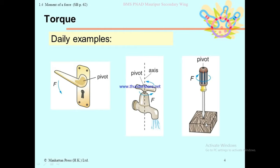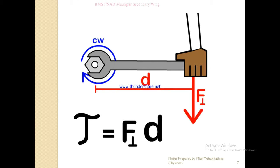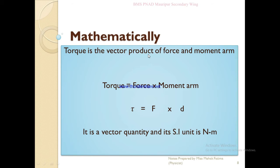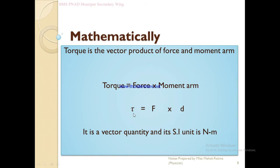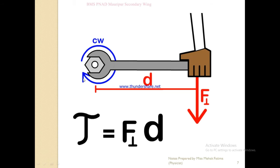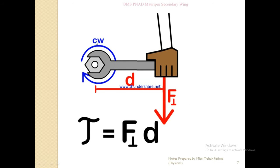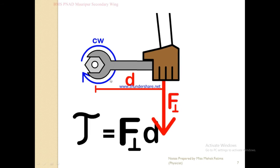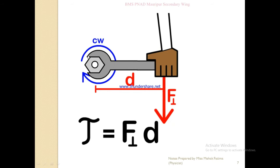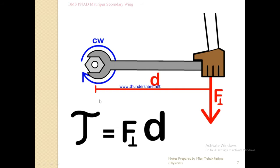Mathematically, torque is the vector product of force and moment arm: τ = F × d, where F is force and d is the moment arm distance. Torque is a vector quantity and its unit is Newton-meter (N·m). The force direction can be clockwise, as when a screw moves clockwise.